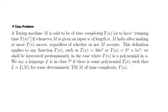This is the definition for a P-class problem taken directly from the book by John E. Hopcroft. It says that the Turing machine M is said to be of time complexity T(n) if whenever M is given an input W of length N, M halts after making at most T(n) moves, regardless of whether or not M accepts. This definition applies to any function T(n), where T(n) can be 50n² or T(n) can be 3^n + 5^4. We shall be interested predominantly in the case where T(n) is a polynomial in N.